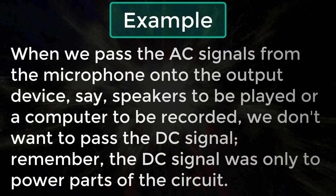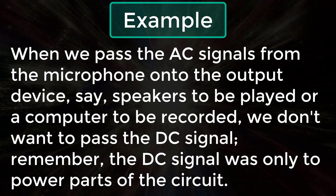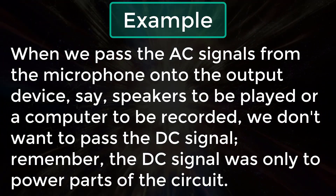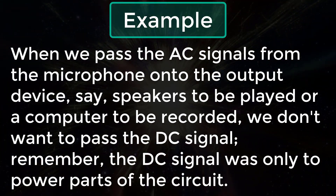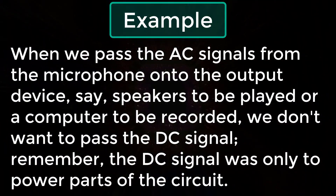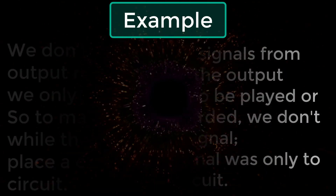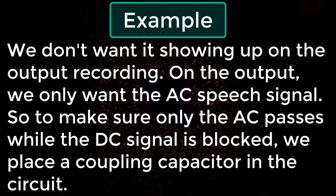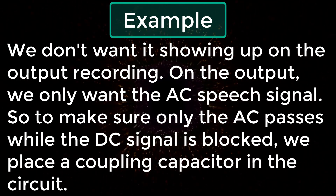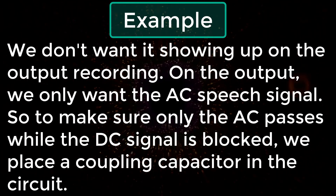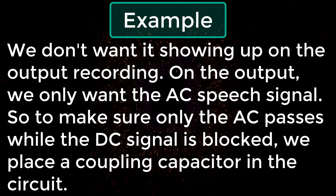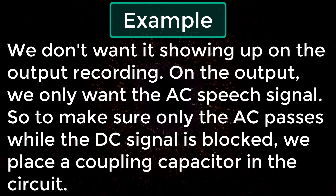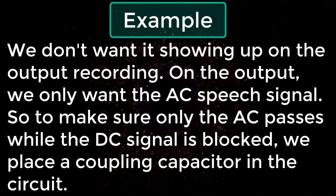When we pass the AC signals from the microphone to the output device — say a speaker to be played or a computer to be recorded — we don't want the DC signal. The DC signal was only to power parts of the circuit; we don't want it showing up in the output recording. On the output we only want the AC speech signal. So to make sure only the AC passes and the DC is blocked, we place a coupling capacitor in the circuit. This is one perfect example to showcase the benefits of having a coupling capacitor.